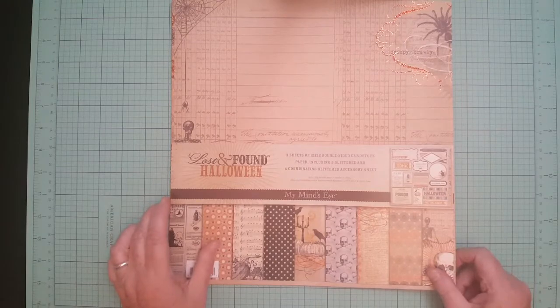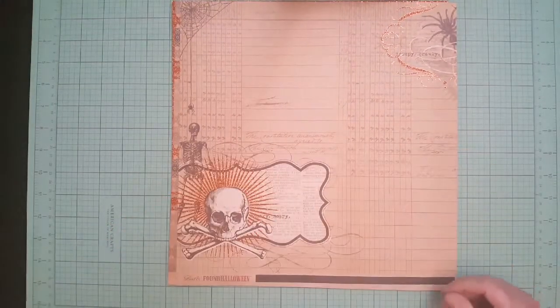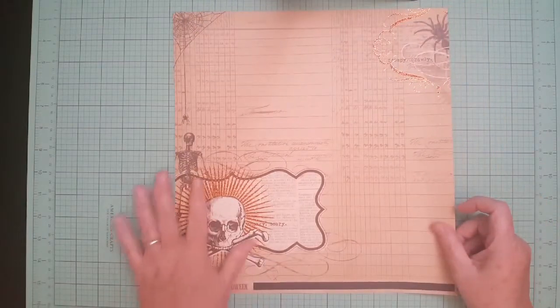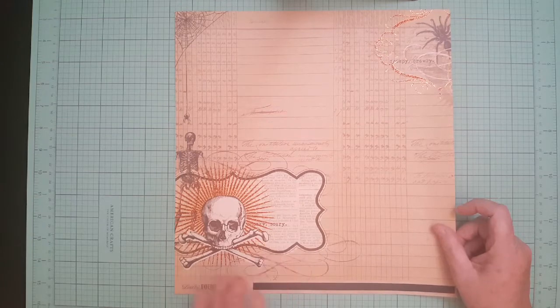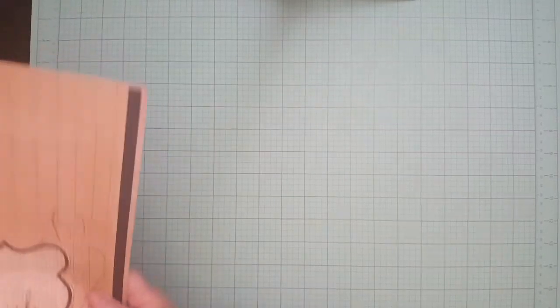It comes with nine sheets of paper and an accessory sheet by My Mind's Eye. Oh my god, it's so gorgeous. I love it. It's like vintage, it's amazing. I'm not going to cut it up. I'm going to use it like this as a background. I'm not going to use it in my October daily. I'm going to make layouts with it. It's so cool.